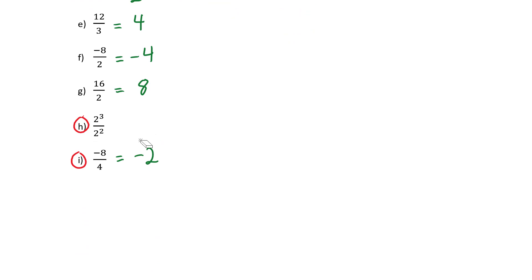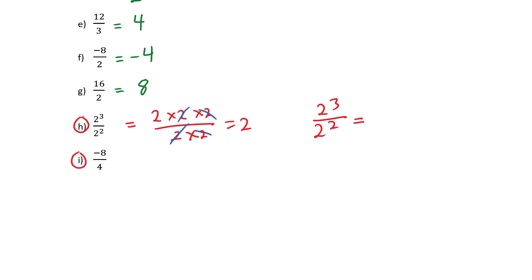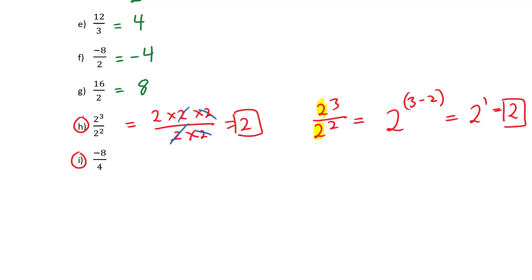For H: we have 2 cubed over 2 squared. The hard way: 2 times 2 times 2 over 2 times 2 — you can see these cancel out and we're left with 2. Alternatively, using exponent laws: when dividing two exponents with the same base, put it over the same base and subtract the exponents — 2 to the 3 minus 2 is 2 to the 1, so the final answer is 2. Another way: 8 over 4 — take a 4 out of top and bottom to get 2 over 1, which equals 2. Three different methods to solve the same problem.